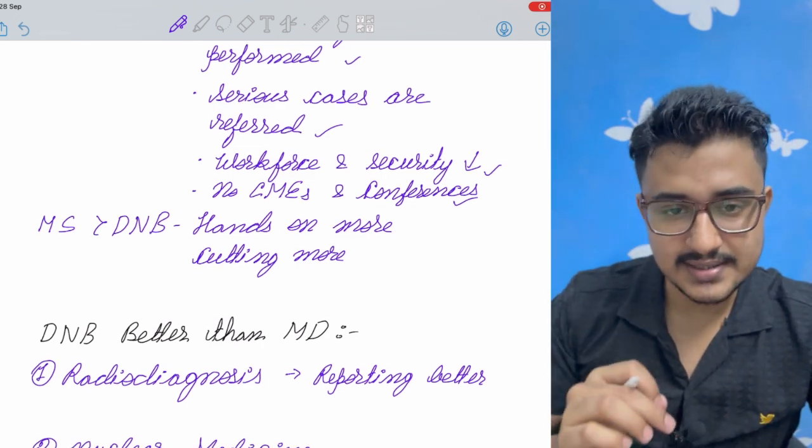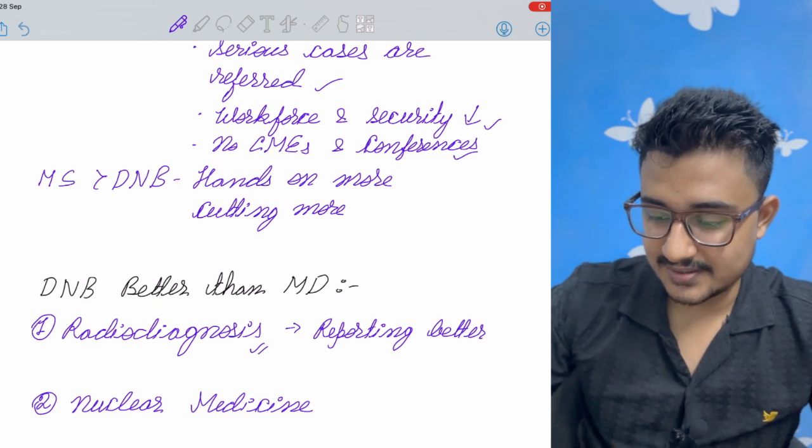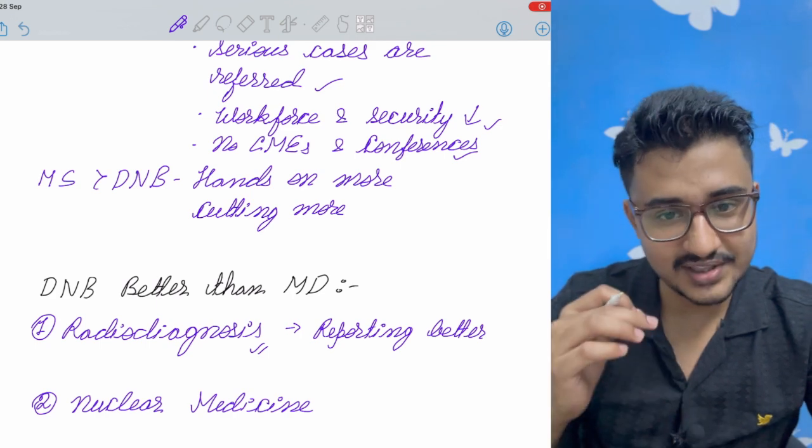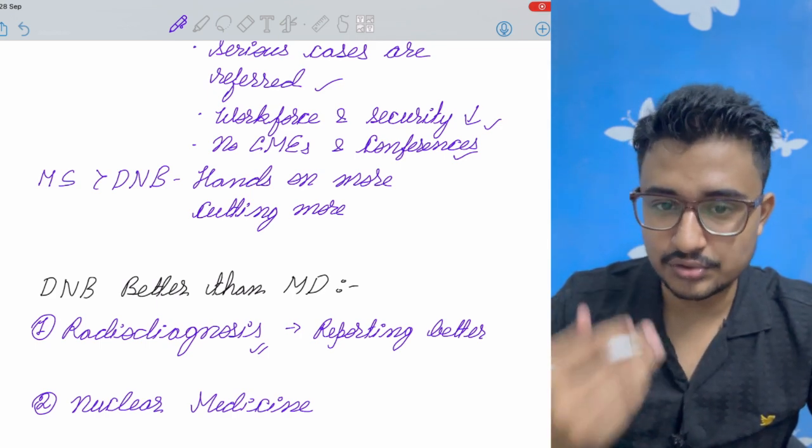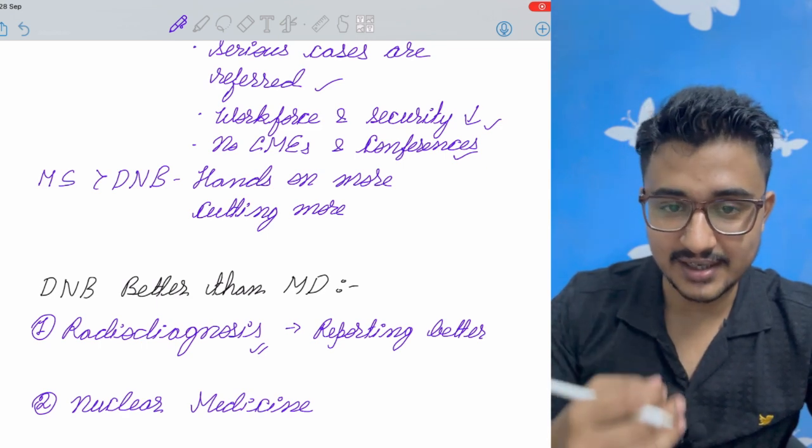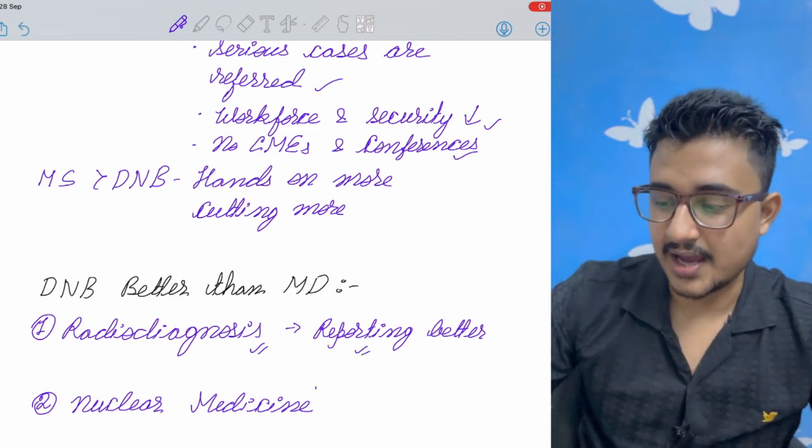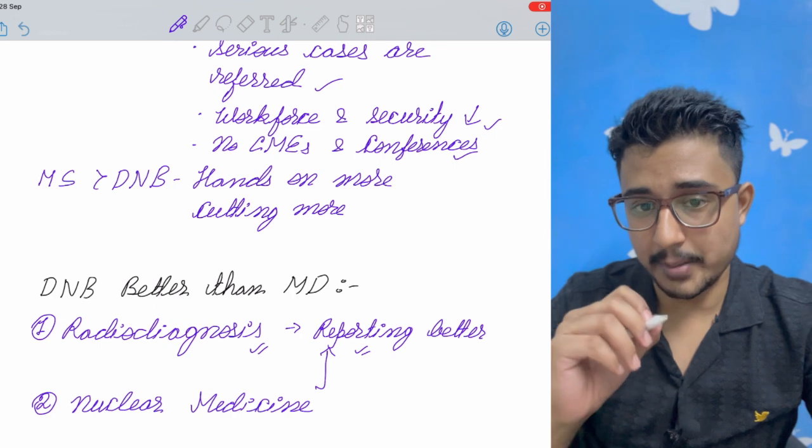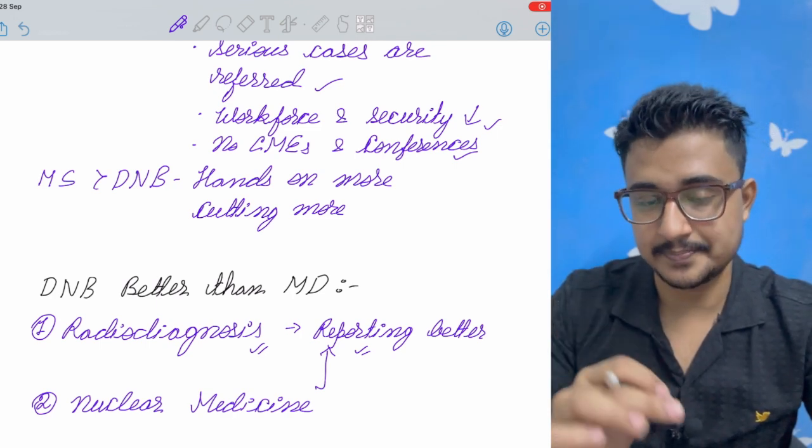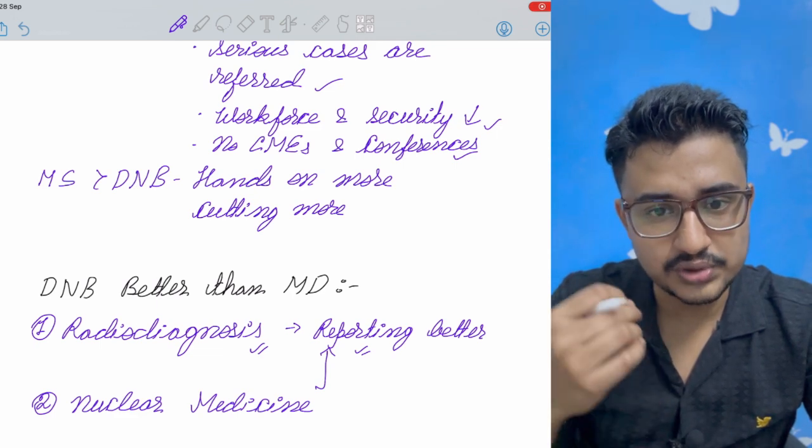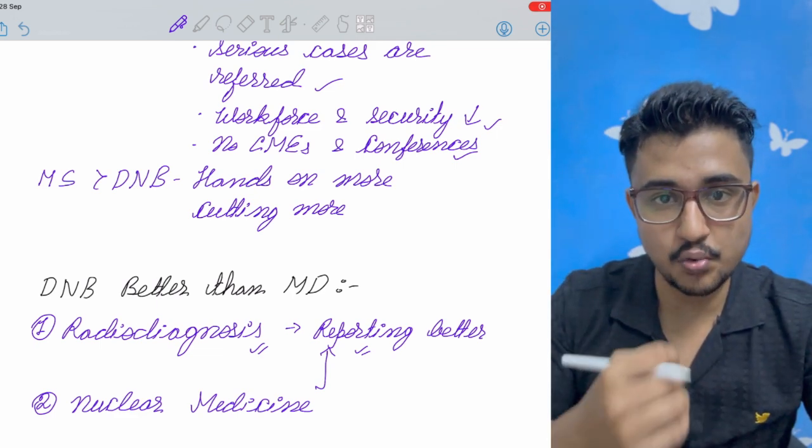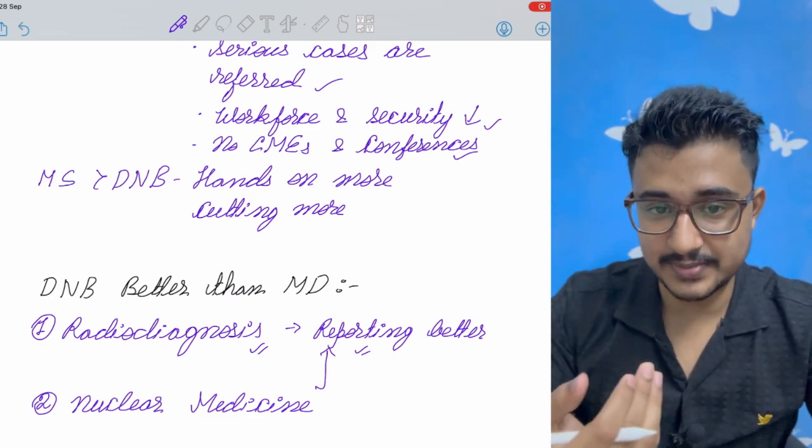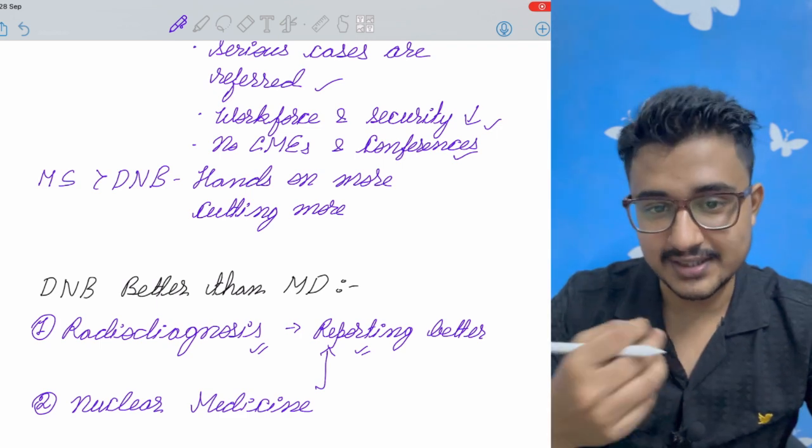Now, in cases where DNB is better than MD also, these are the radio diagnosis just because you get the higher investigations. In many places, there is no MRI. In private setups, you can also get the exposure to intervention radiology at an early life during your residency only. And there is reporting better for radio diagnosis and nuclear medicine. So in corporate setup, you get to know that how actually the reporting is required for the corporate hospital. And there, your mentors train you like that only. So the reporting becomes better and your CV also becomes better. Because ultimately, what matters is the skill.